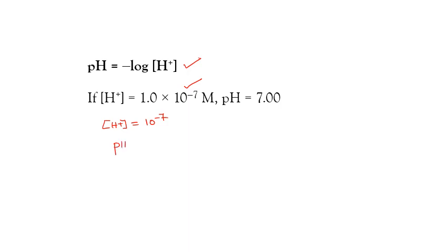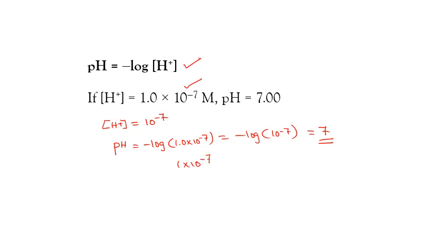Substituting into the pH formula: pH equals negative log of the hydrogen ion concentration, which is 1 × 10⁻⁷ or simply negative log 10⁻⁷. Plugging into the calculator gives 7. There is a shortcut: if the concentration is in the form 1 × 10 to some power, we can write negative times that negative exponent times log base 10. Since log 10 equals 1, negative of negative 7 equals 7.